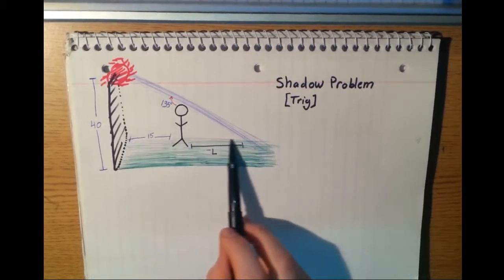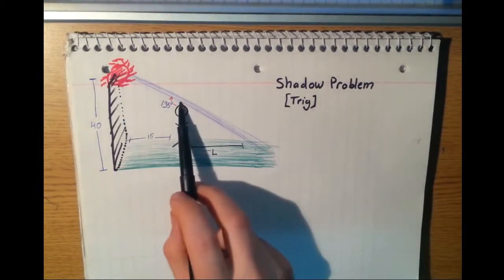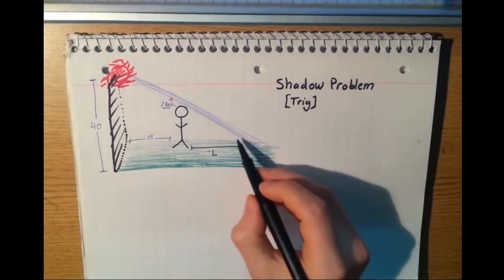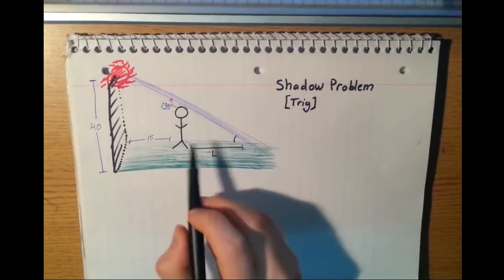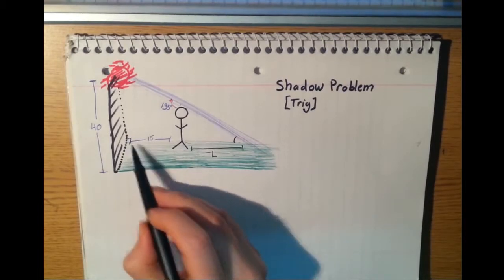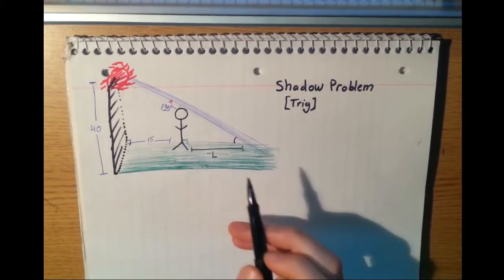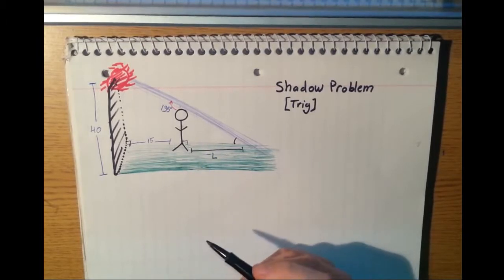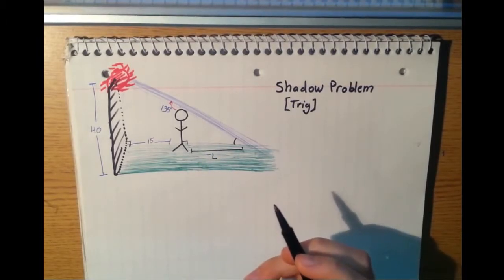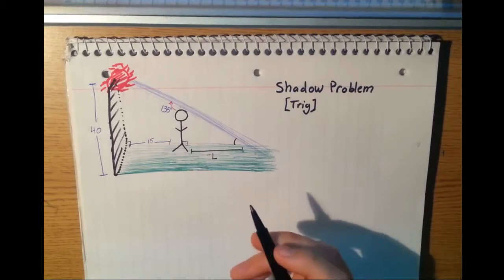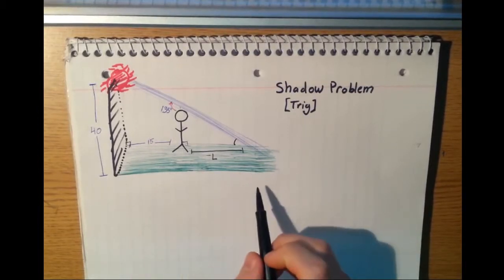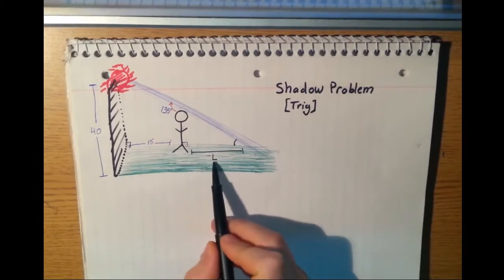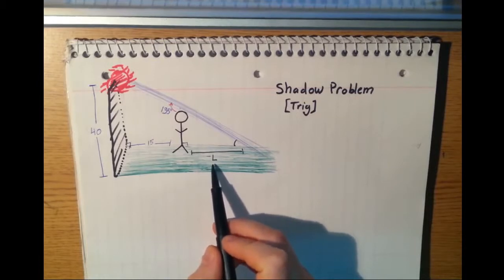We have one triangle, the big one right here, and we have another smaller triangle right here. They share this angle right here and they also share this right angle right here and right here. So we can say that the sides are proportional and the angles are the same on these triangles. Using that relationship, we can set up some equations to solve for the length of the man's shadow. So let's start.